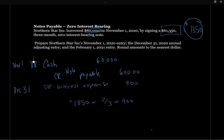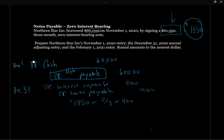We're not going to set up an interest payable on our balance sheet. Rather, we're going to include the amount in the value of the note payable, because as at February 1st, the note payable is going to be worth $61,350. So here we're actually going to credit the note payable — the note is becoming more expensive, as opposed to creating a separate interest payable. That balancing credit is $900.